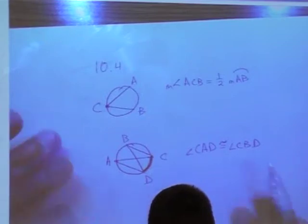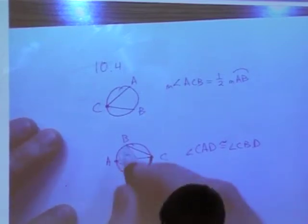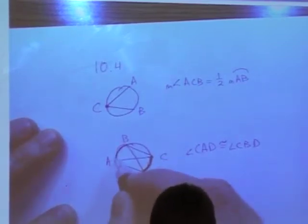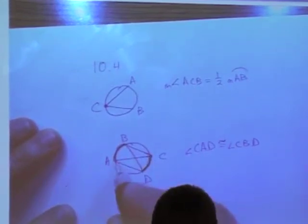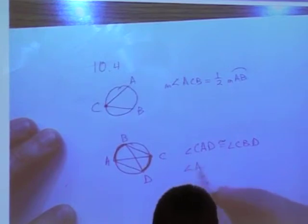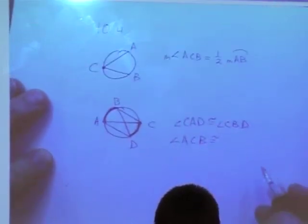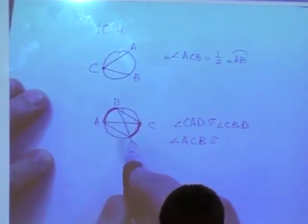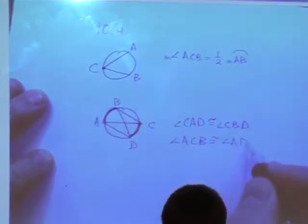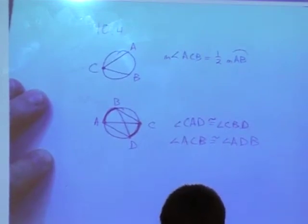We also have other arcs that are on here. You have this arc, you have arc AB. So that means this angle here, ACB, is congruent to the other angle that shares that same arc, ADB.